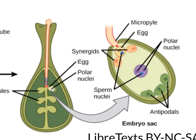Once the two sperm cells enter the embryo sac, one of them enters the egg cell — here's that sperm here — and one of them enters this cell called the central cell, and that's this sperm here. This cell is also called the binucleate cell because it has two haploid nuclei, this one and this one.